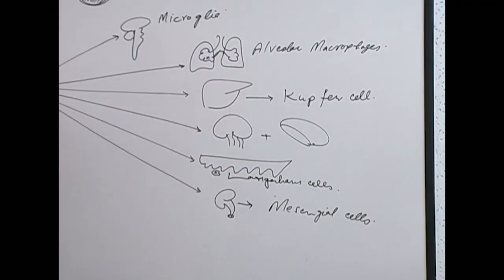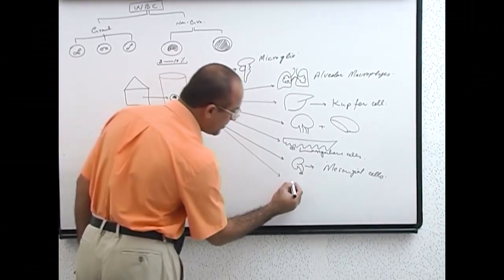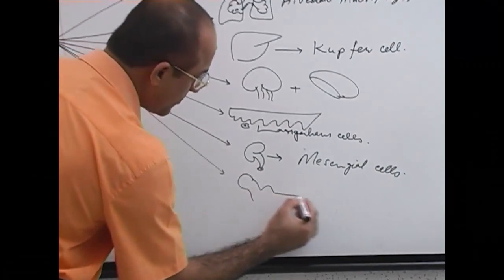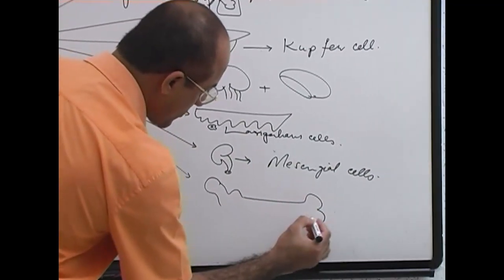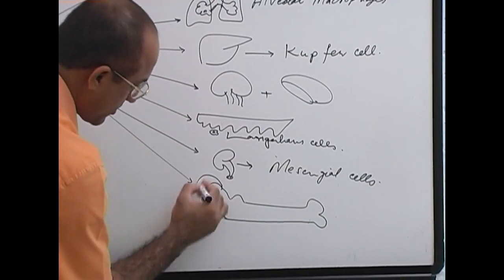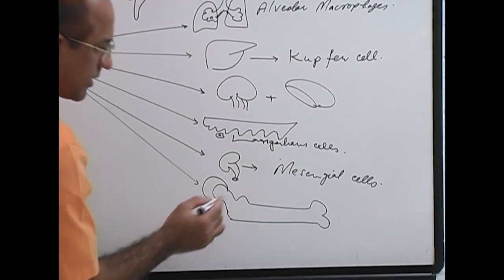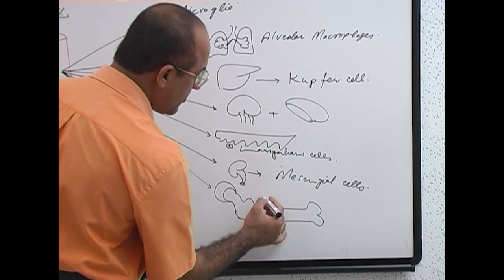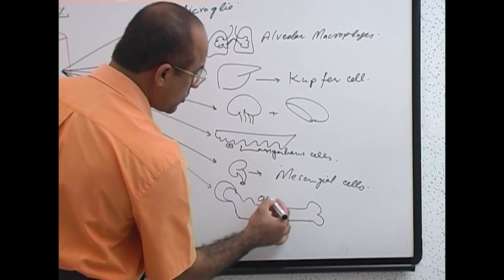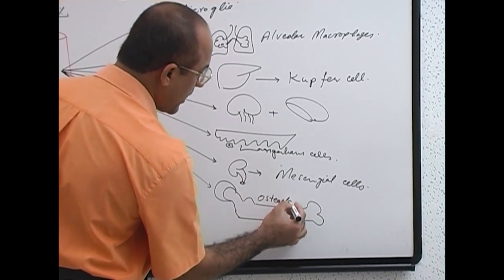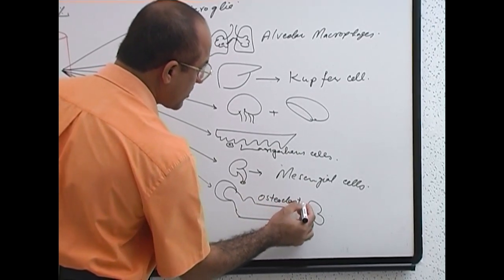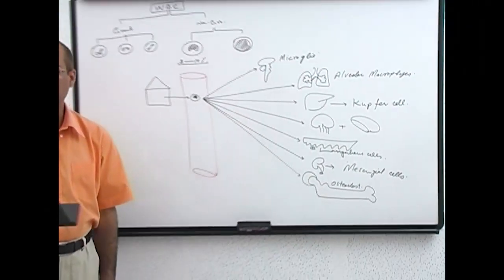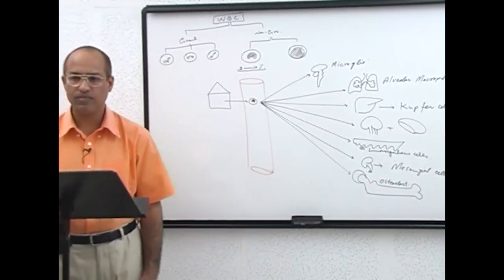Macrophages also shift to bone tissue, where they are called osteoclasts. Osteoclasts in the bones are a very special type of macrophage.